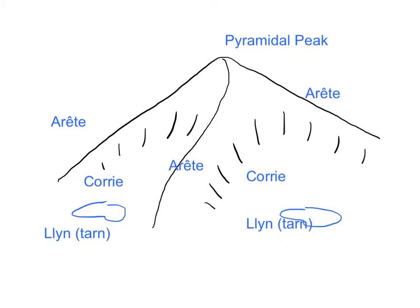In this part of the picture we've now labelled all the key features. So we have a pyramidal peak at the top, aretes striking down from the peak, and then in between the aretes we have the corries, and I've illustrated the tarn inside each corrie.